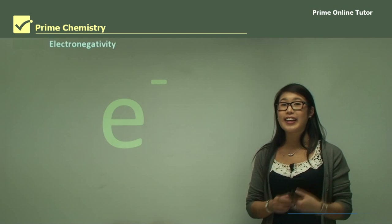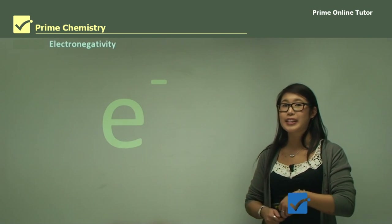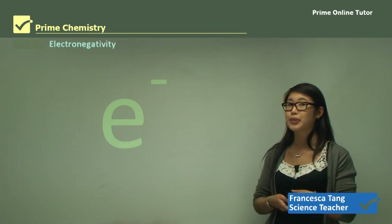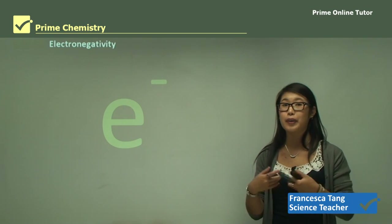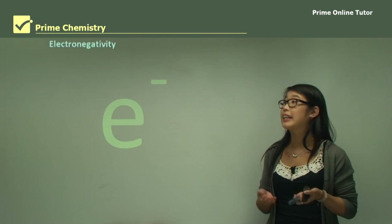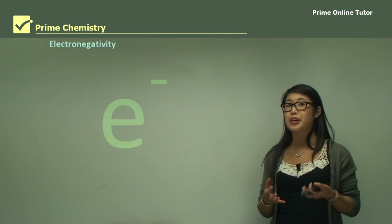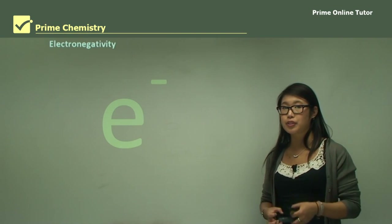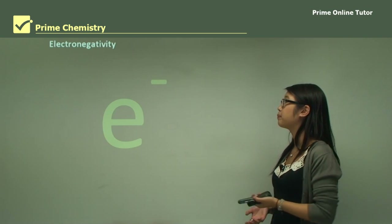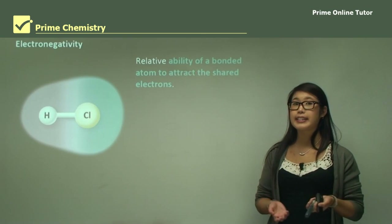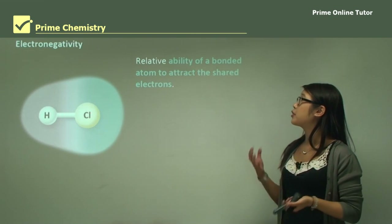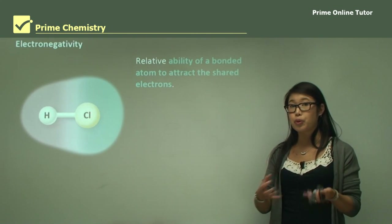In our last lessons, we looked at how to draw electron dot diagrams and also the VSEPR theory — how the shape of a molecule is. Now we'll be looking at electronegativity, or the ability for an atom to pull electrons closer to itself compared to the other. Electronegativity is the relative ability for an atom to attract the shared electrons in a bond towards itself.